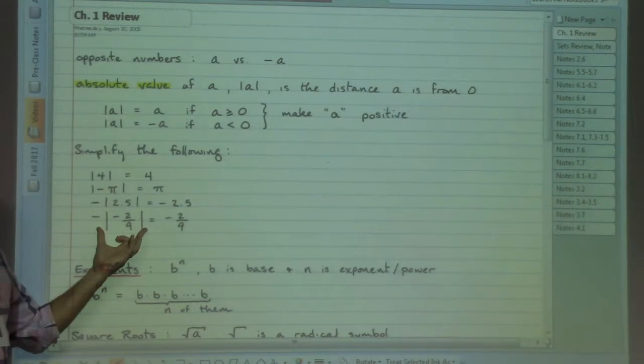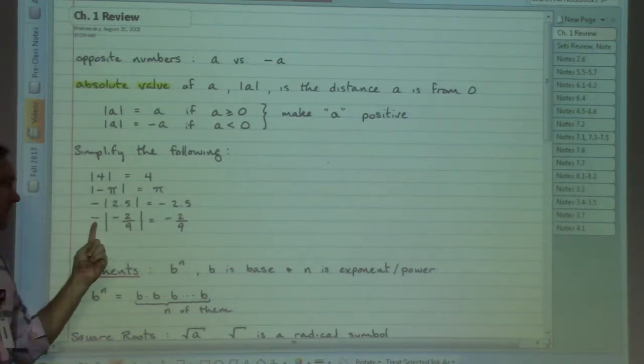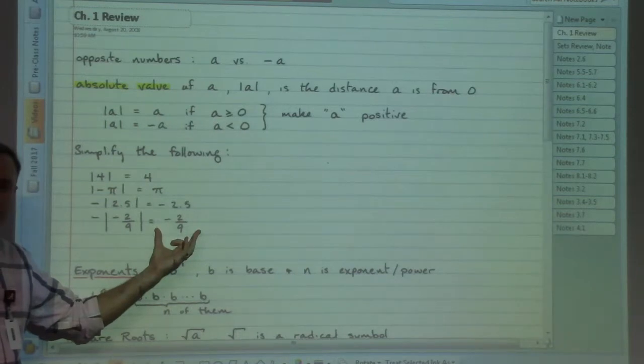And likewise here in this fourth example, once this number gets out of math jail, it will turn positive. But with the negative influences out in front, overall our answer will be a negative.